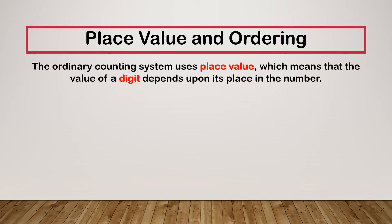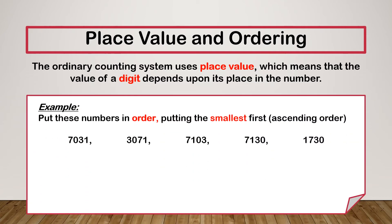So, ordering. When ordering numbers, we're using our place value. For example, if we had to put these numbers in order, putting the smallest first — ascending order — one of the things I've seen people do in the past is write the numbers on top of each other. Some people find that easier, so I'm going to do that. Some people find it easier to write those numbers underneath the first one.